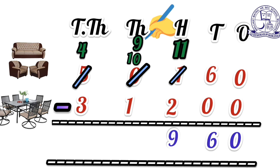Next, ten-thousands place: we have 4 and 3. Since we borrowed 1 earlier, ten-thousands is now 4. So 4 minus 3 equals 1. Write 1 in the ten-thousands column. Our answer is 18,960. The difference in cost is 18,960 rupees.